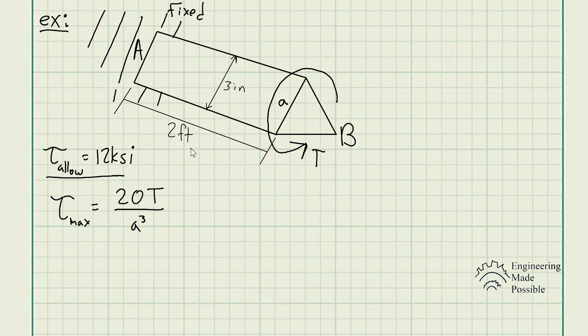The length of the shaft is 2 feet. It's fixed on one end at point A, and at point B, we have this torque T being applied. So from here, all we do is some algebraic manipulation to solve for T.